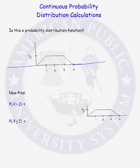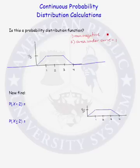So what determines whether a function is a probability distribution function or not? Several conditions must be met: the function must be non-negative, and the area under the function must be equal to 1. Let's check these two conditions to see whether we have a probability distribution function.